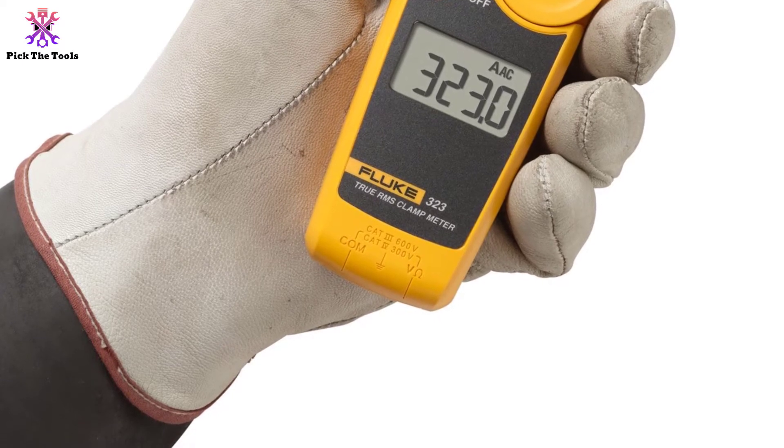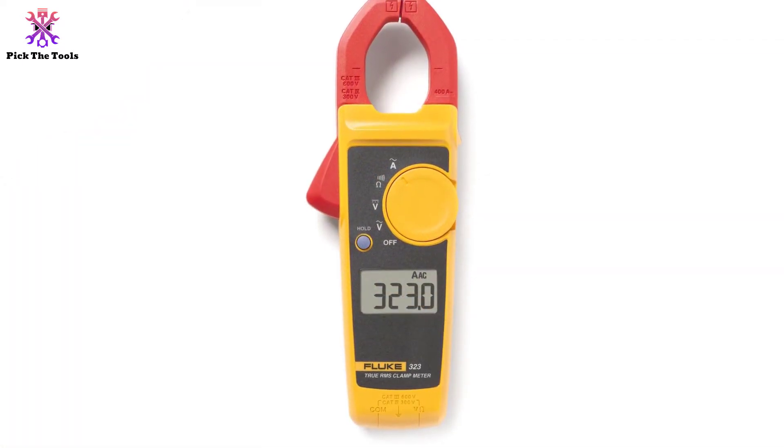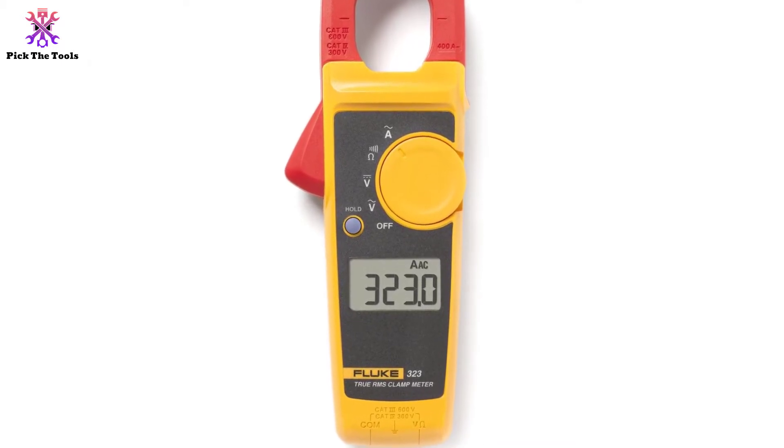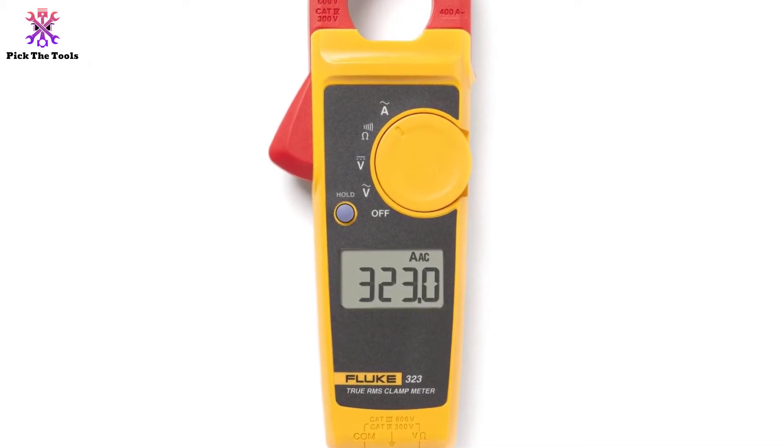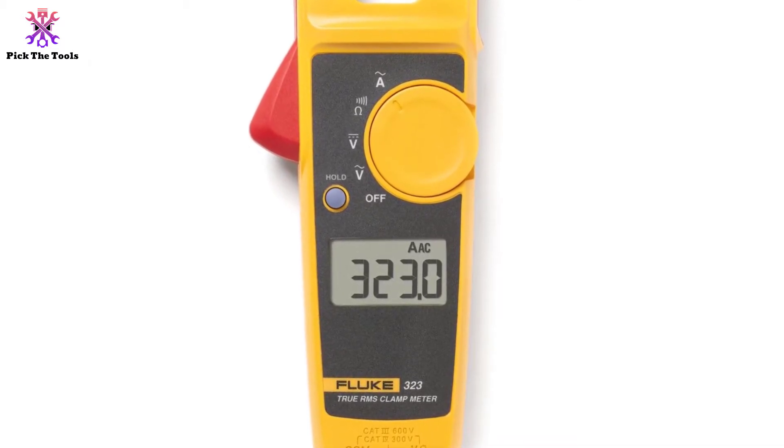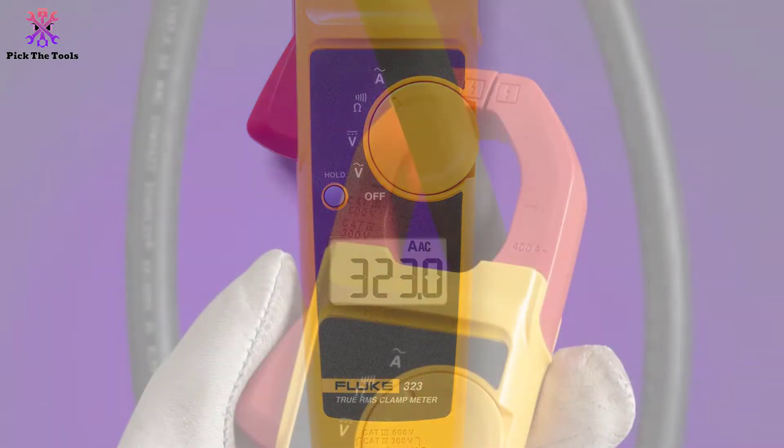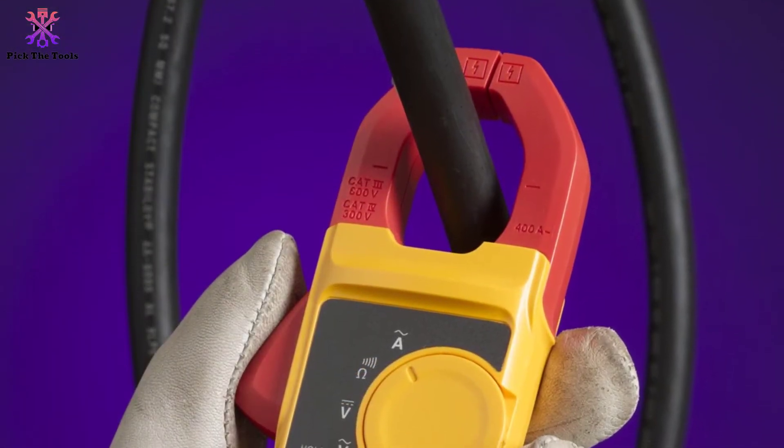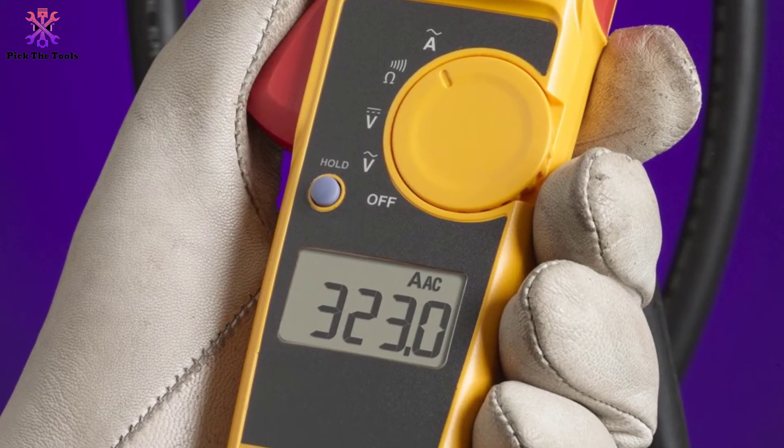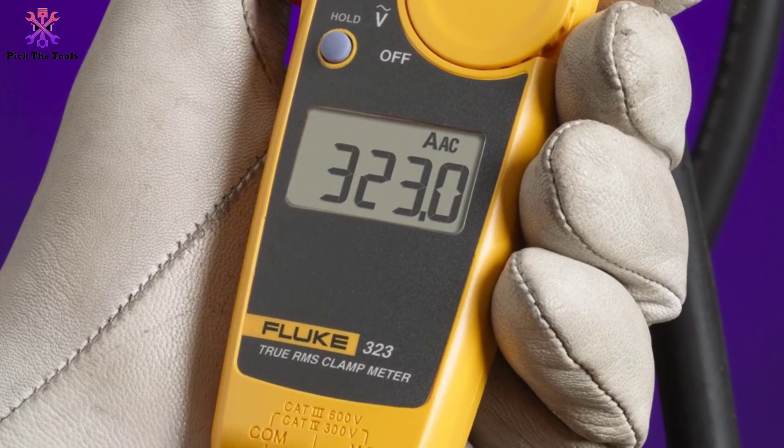This clamp meter uses broad jaws while measuring the flow of electricity. The jaw opening measures the conductor electricity accurately up to 30 millimeters, which contains enough space to measure without interruption of the circuit. Fluke 323 clamp meter is equipped with a beeper for continued troubleshooting without glancing at the meter, and it runs silently. The professionals believe in Fluke because of its accuracy and reliability. The overall estimation of the Fluke 323 comes with a reasonable price and excellent features.